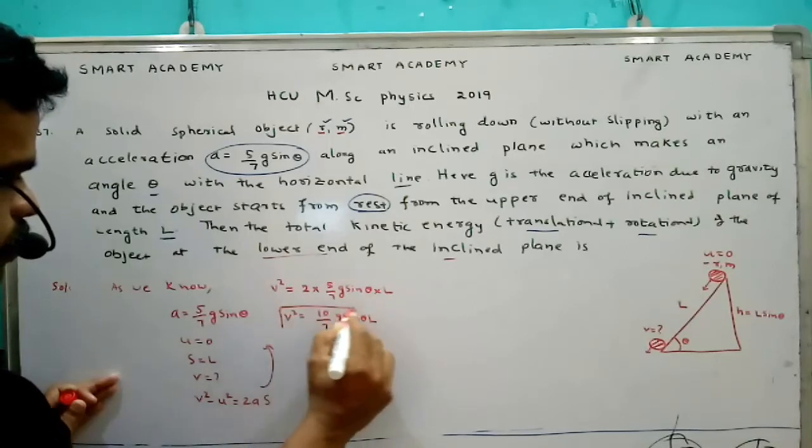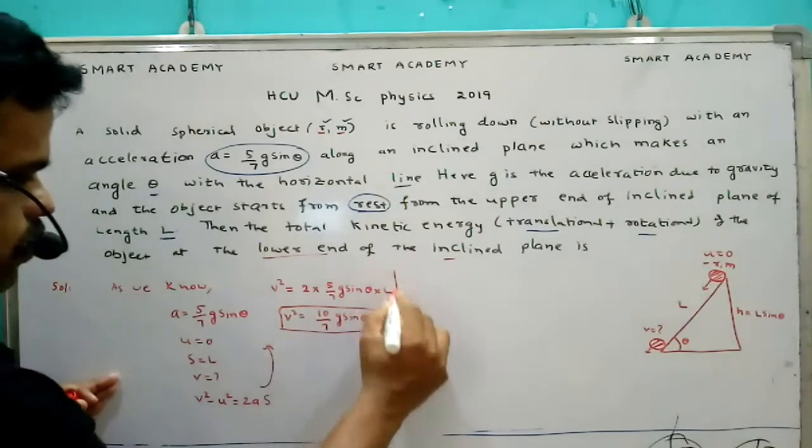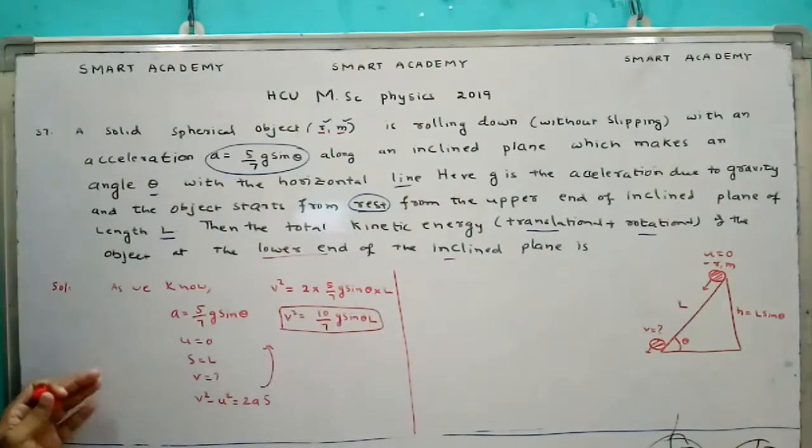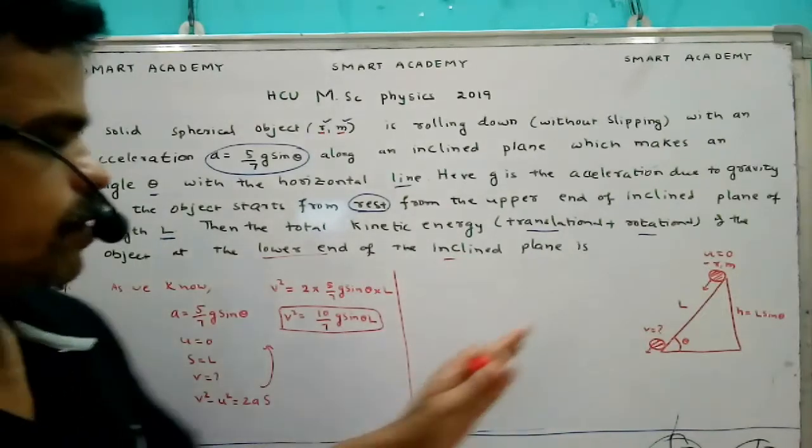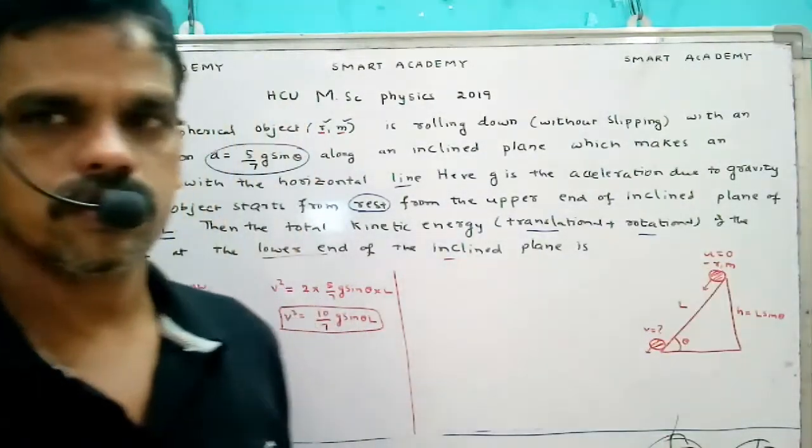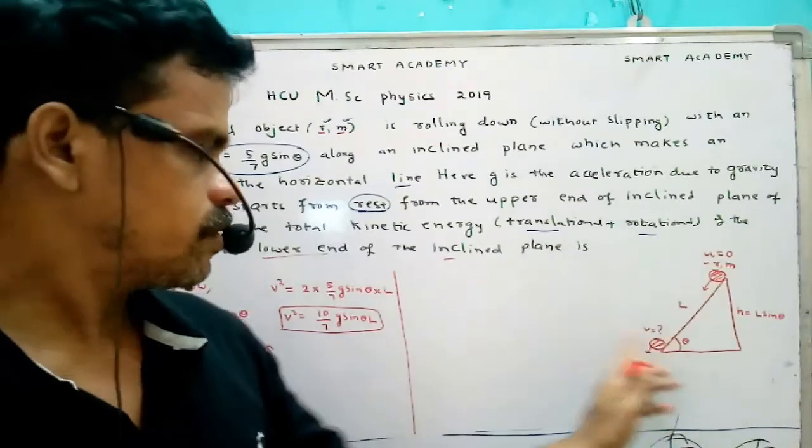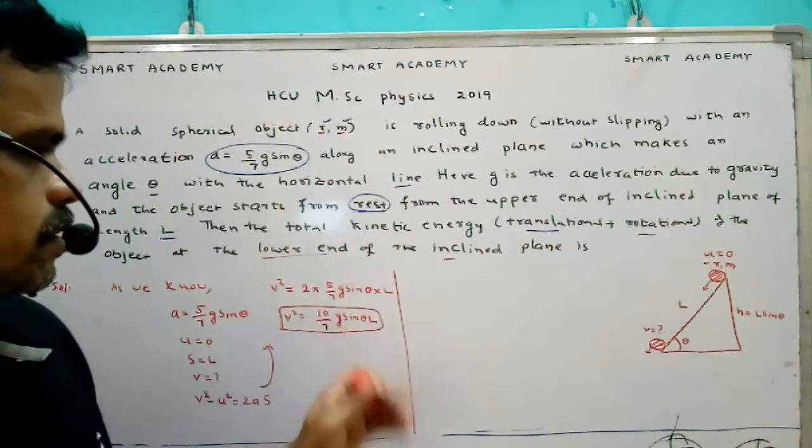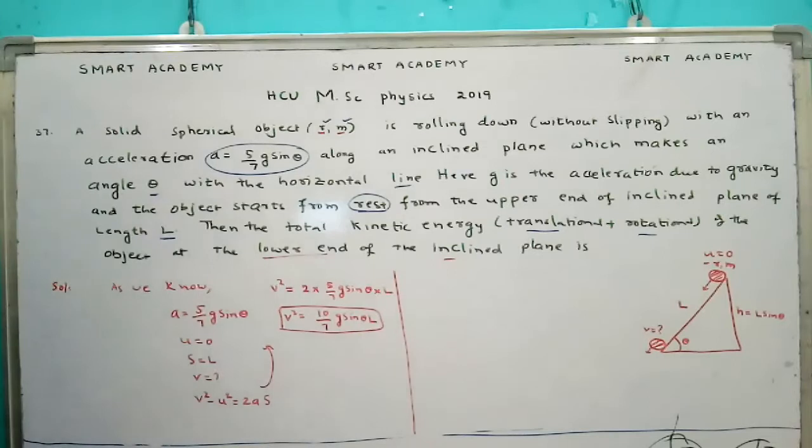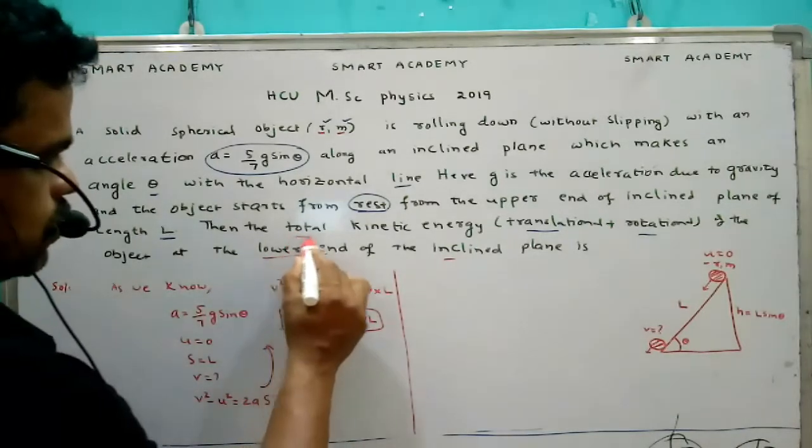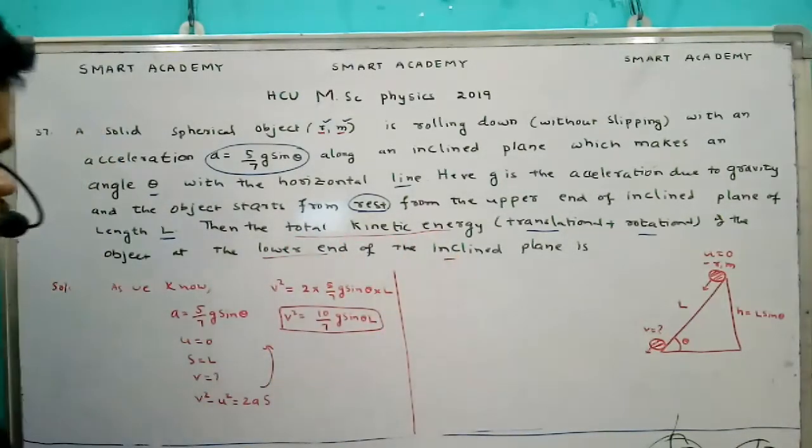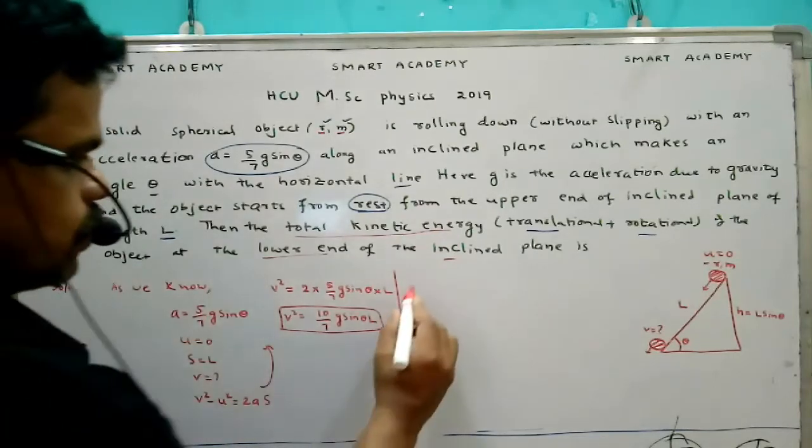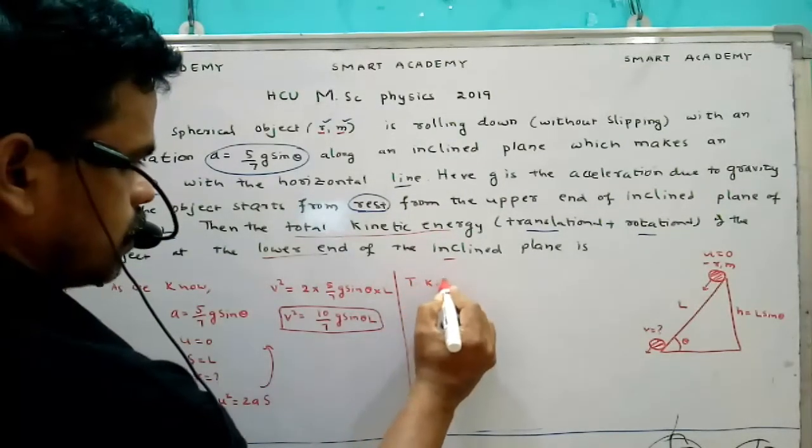V square plus v square equal to 0, so if we can assume that v square equal to zero. So here, initial velocity starts from rest, that means initial velocity is zero. Final velocity v square equal to 10 divided by 7 g sine theta. Then the question is total kinetic energy of the object.